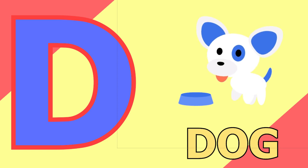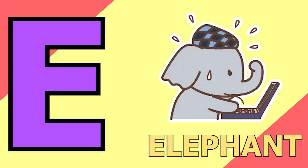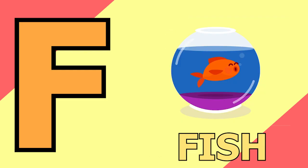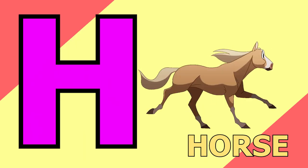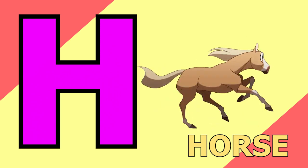E for elephant, elephant means hathi. F for fish, fish means machli. G for grapes, grapes means angur. H for horse, horse means ghoda.